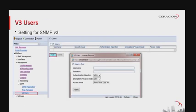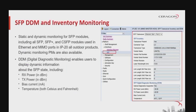This is where to configure the SNMP v3 user settings. SNMP version 3 defines a user-based security mechanism that enables per-message authentication and encryption. This is where you can set up version 3 users and writes. Static and dynamic monitoring is available for SFP modules, including SFP, SFP+, and CSFP modules used in Ethernet and MIMO ports in IP20 all-outdoor products. DDM PMs are also available but only via the CLI. Note that DDM parameters are not relevant for electrical SFPs.